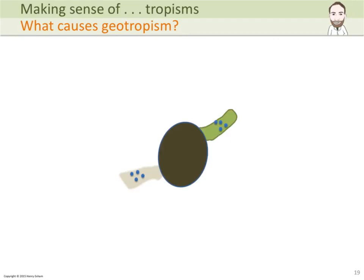But it will actually have a different effect in both of them. In the root, it actually causes retardation of growth — the cells stop dividing where the auxin is — causing the top side of the root to grow faster, and it bends down. Whereas in the shoot, it has a slightly different effect: it will again increase the growth rate and cell elongation rate, as we saw with phototropism, which will cause the shoot to curl upwards.